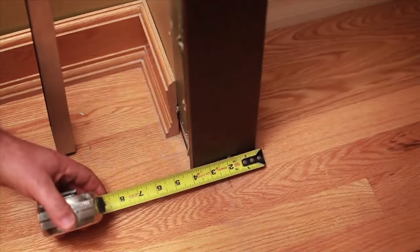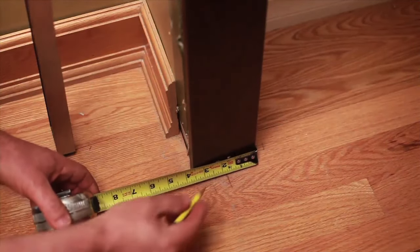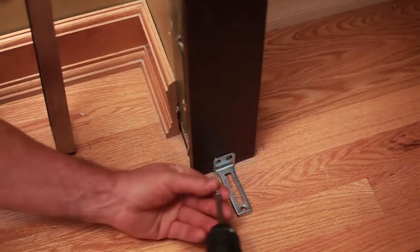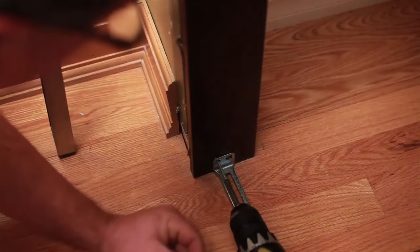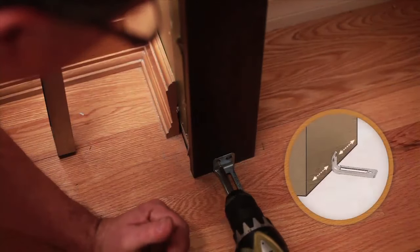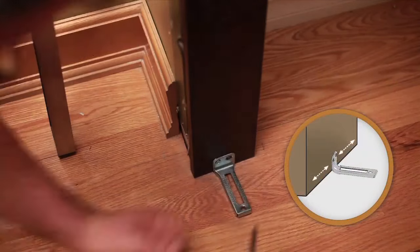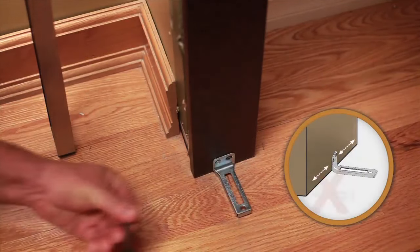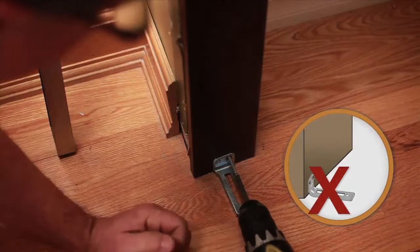First, fasten the anchor for the adjustable pivot hinge to the floor and its vertical section to the frame using the one and a half inch (3.8 centimeters) countersunk screws. Plan sufficient clearance between the frame edge and the anchor to ensure that once installed, the door does not exceed the frame.